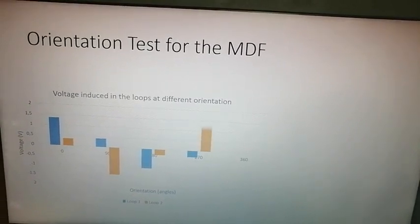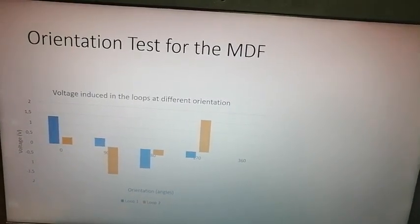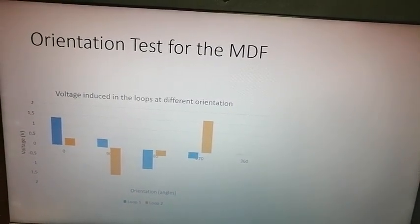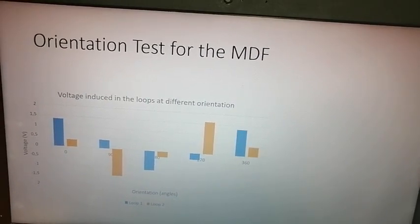At 270 degrees loop 1 is smaller than loop 2, and loop 1 is negative while loop 2 is positive. At 360 degrees we are back at the original position.